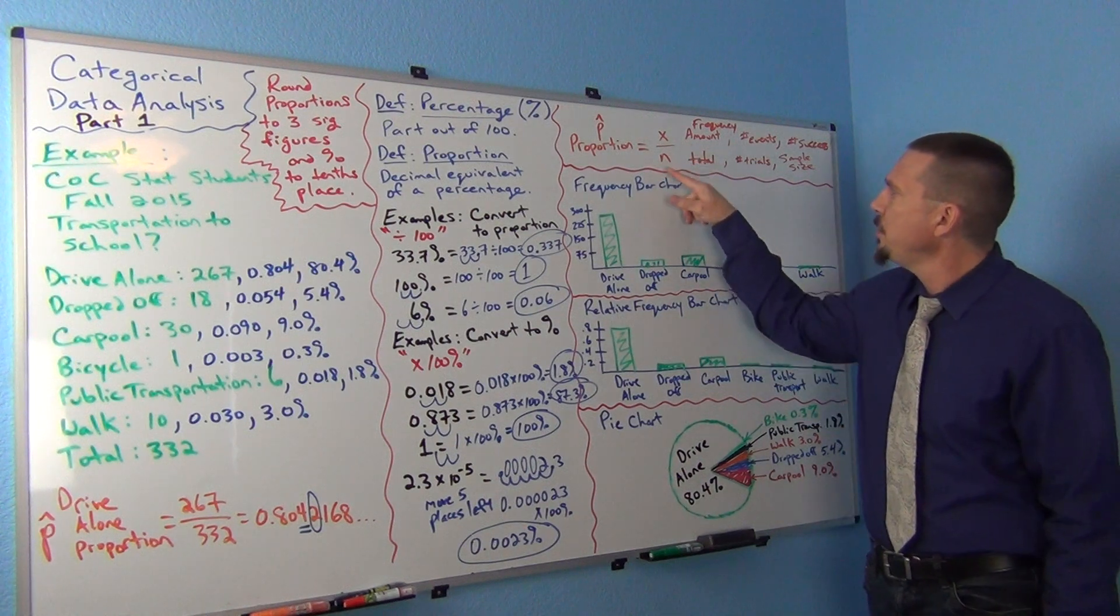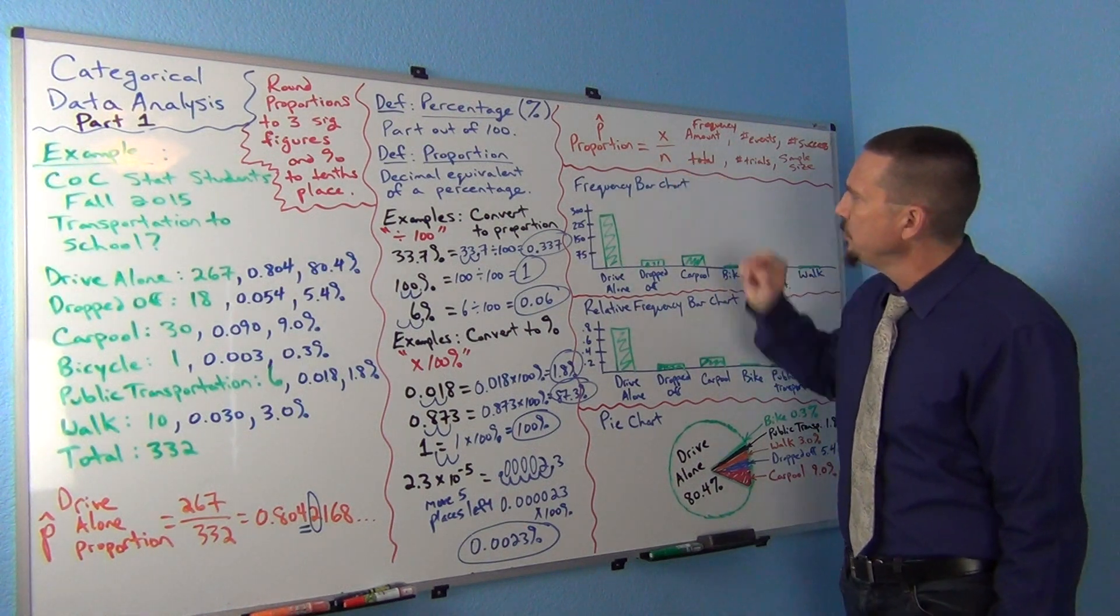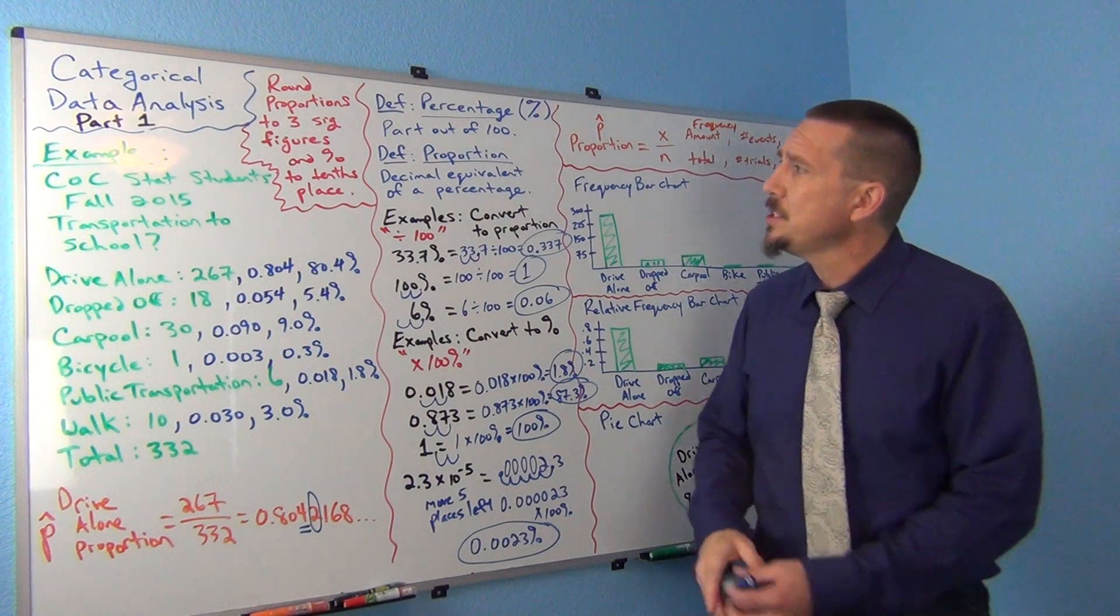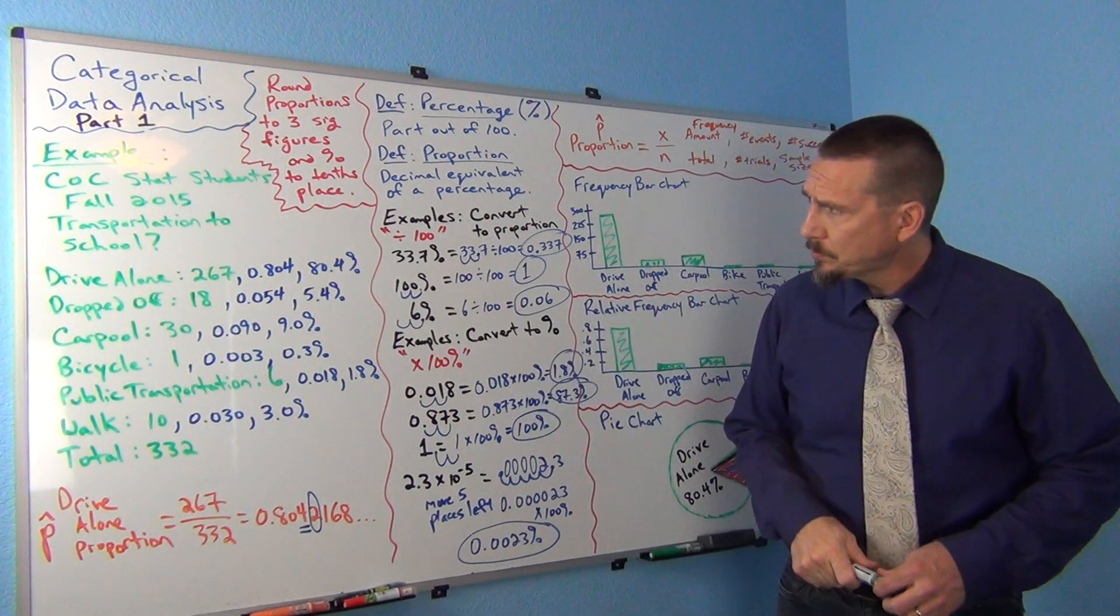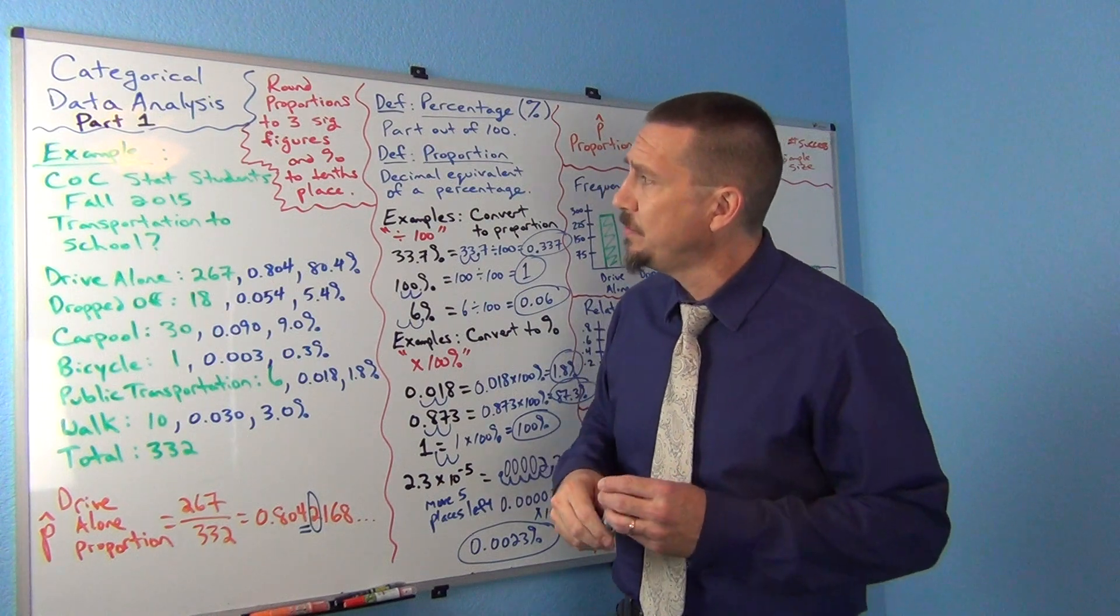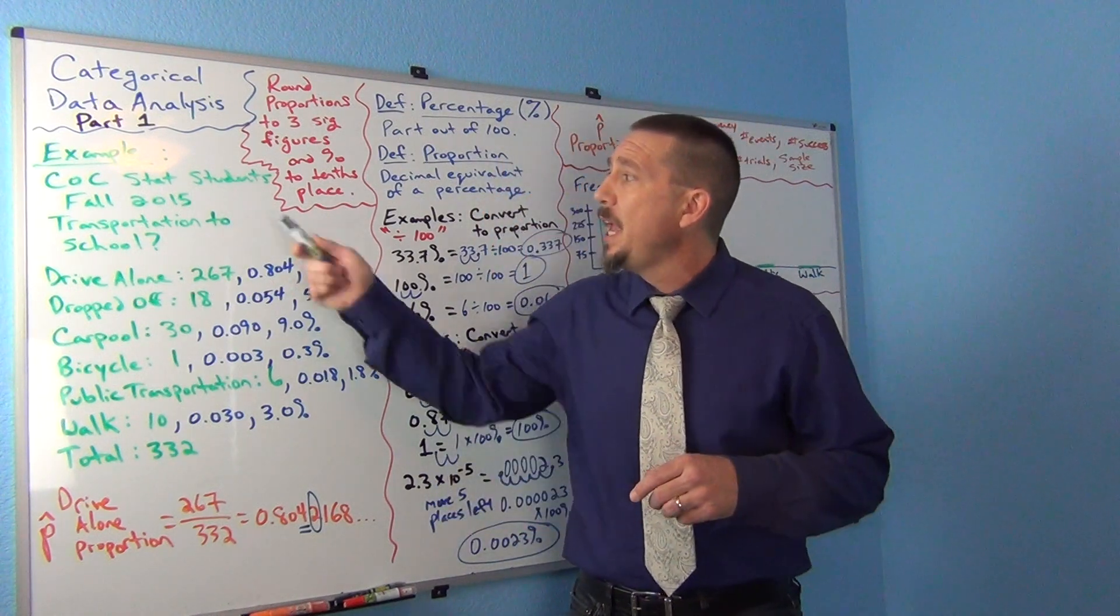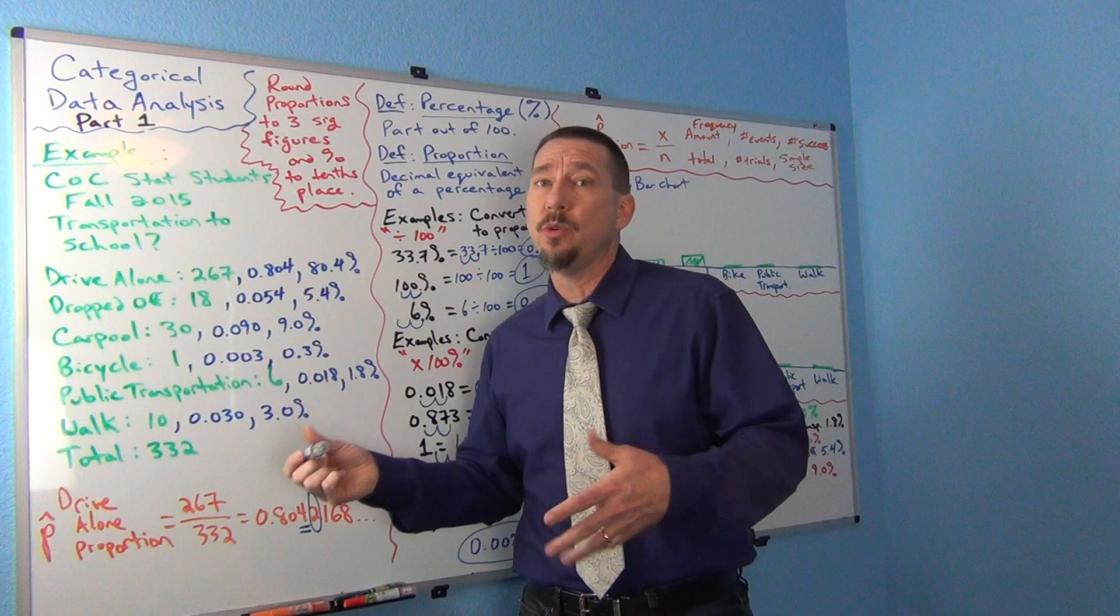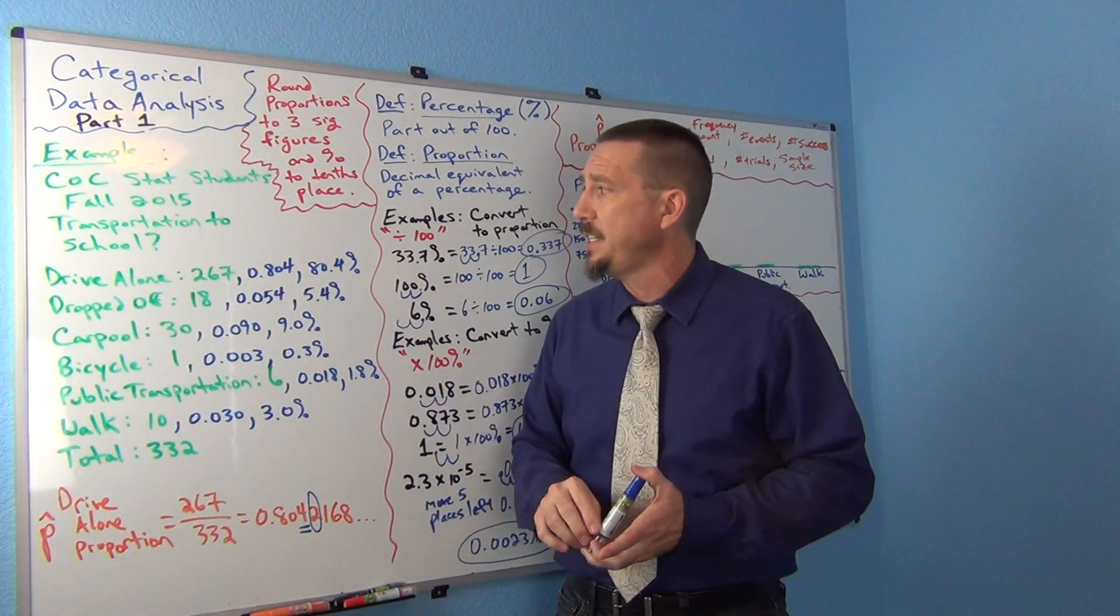in your data. So that would be the lowercase n a lot of times. So let's look at an example here. I pulled this off my website. This is COC STAT students in the fall 2015 semester and we asked them how do they get to school? What type of transportation do they take to get to school?